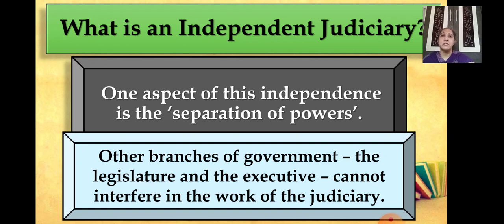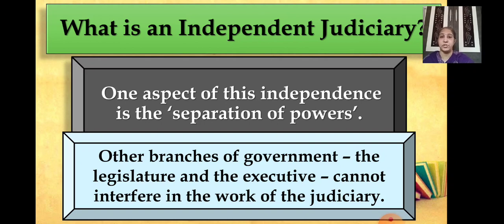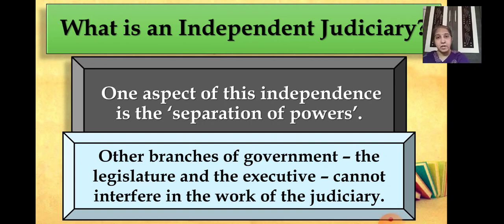What is an independent judiciary? The main thing is that an independent judiciary means the judiciary has to work without interference. That means separate power should be given to the judiciary — that is the independent judiciary. The main aspect of this independence is the separation of powers. The key feature of the constitution means that other branches of the government, that is the legislature and the executive, cannot interfere in the work of the judiciary.